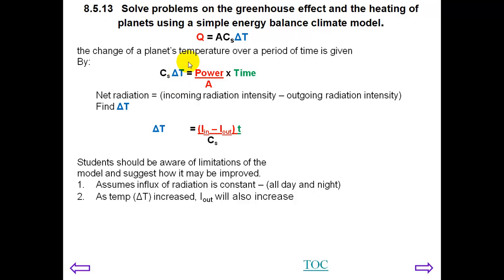As the temperature increases, the I out, the intensity of the radiation which is emitted, will also increase because the object becomes hotter. We have to remember Stefan-Boltzmann's law, which is that the radiation power is proportional to the temperature to the power of 4.